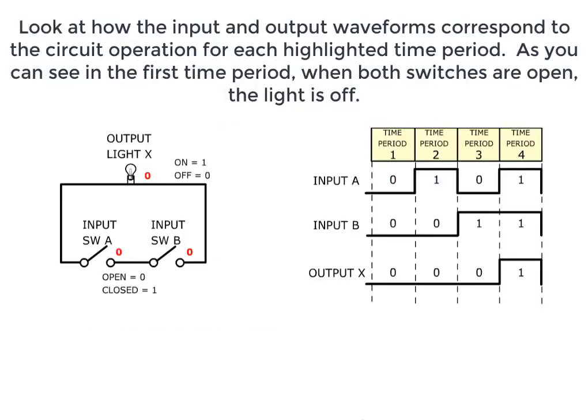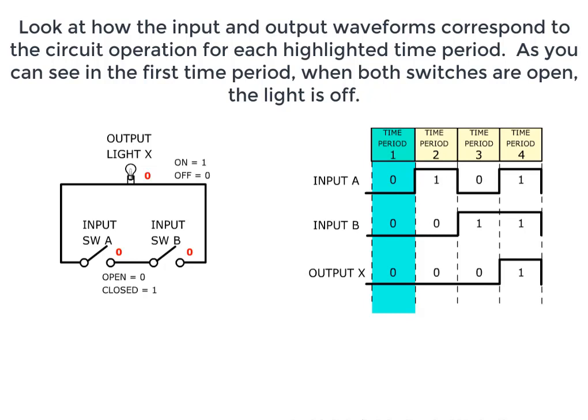Look at how the input and output waveforms correspond to the circuit operation for each highlighted time period. As you can see in the first time period, when both switches are open, the light is off. Notice that the bulb is only on during time period 4, when both switches are closed.